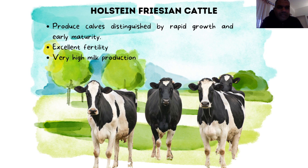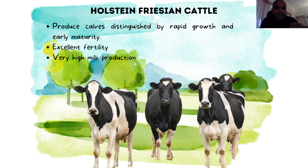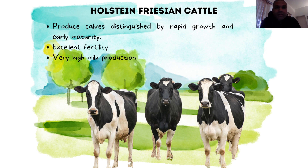Holstein Friesian calves grow very rapidly and there is high production of milk. The high growth rate is important especially from the point of view of the meat industry, so that is the reason why one would keep Holstein.